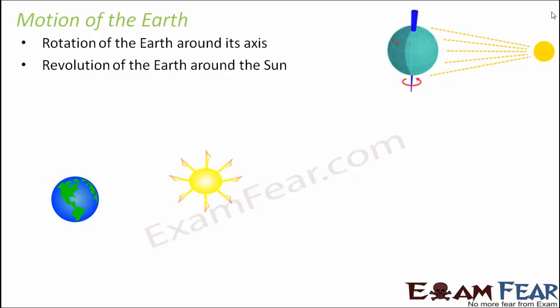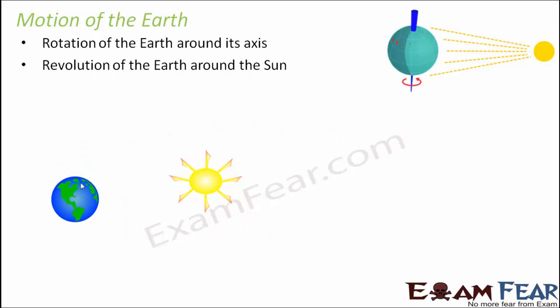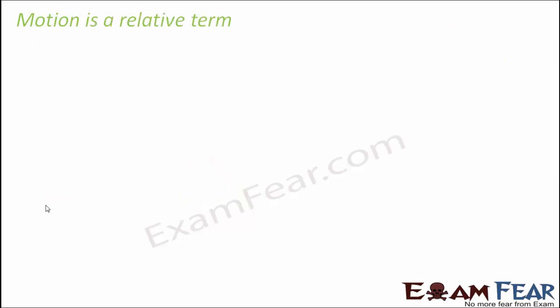The Earth not only rotates about its own axis but also revolves around the Sun, so its position keeps changing with time — the Earth is in motion. Look at things around yourself and identify which objects are in motion and which are at rest. When the fan is switched off it is at rest, but when switched on, the blades start changing position with time and are in motion.